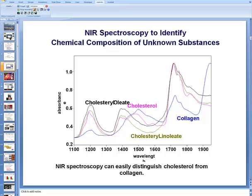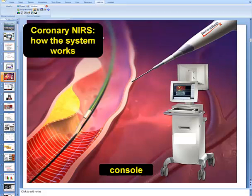For example, collagen has different absorption than cholesterol and cholesterol esters. So based on the absorption of the light, the chemical composition of the tissue — which in this particular case is the presence of lipid core plaque — can be determined.